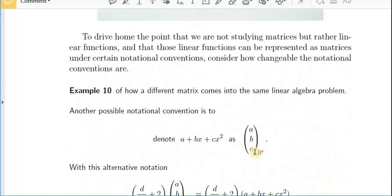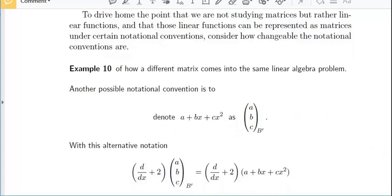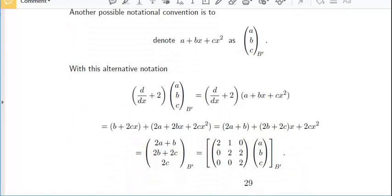Because you can choose many different ways to represent this polynomial as a column vector. In fact, these are only two possibilities. There are many more. So, if we do the same problem this way, we obtain a different matrix representing this linear function. We still get this same result when we take the derivative, but now the 2a plus b is the first component and not the last component. And the 2b plus 2c is the same. The 2c is the last component and not the first component. So, I get a different matrix here, but I can go through the same procedure.